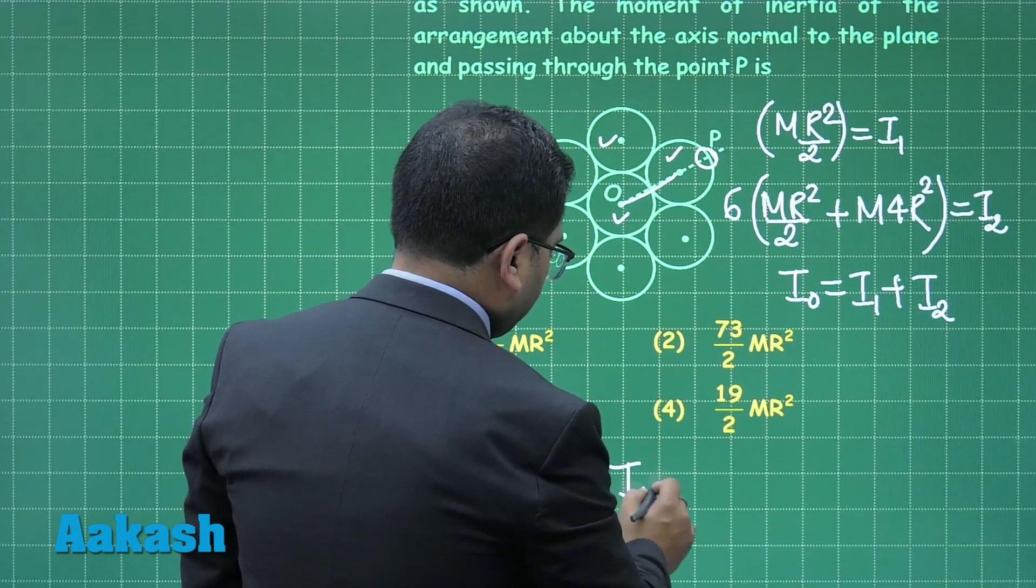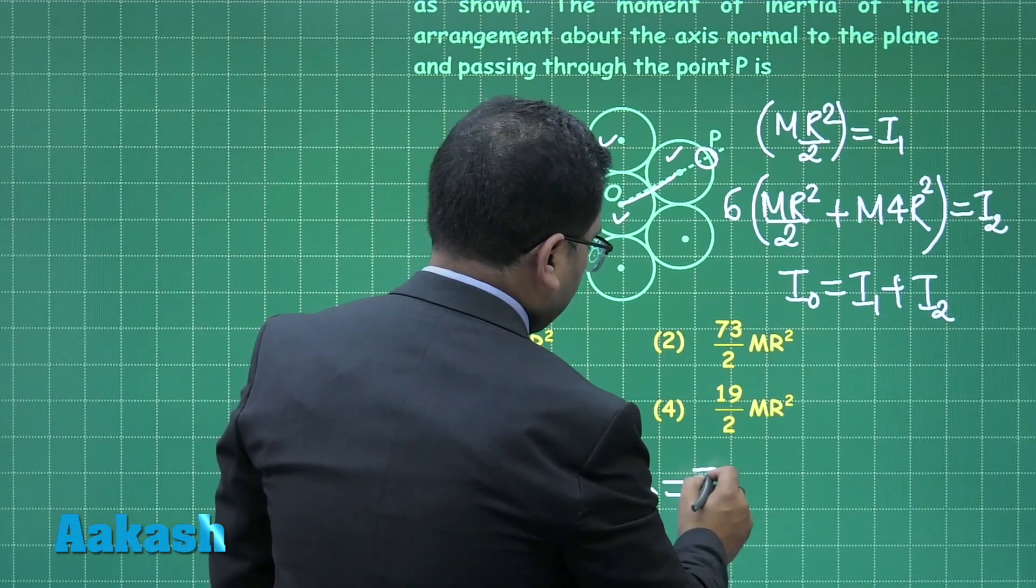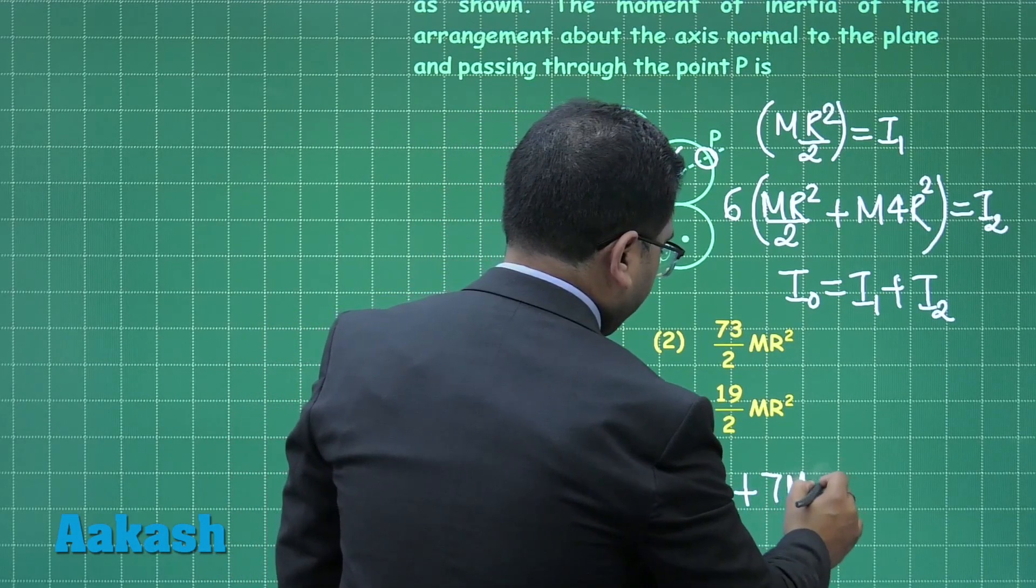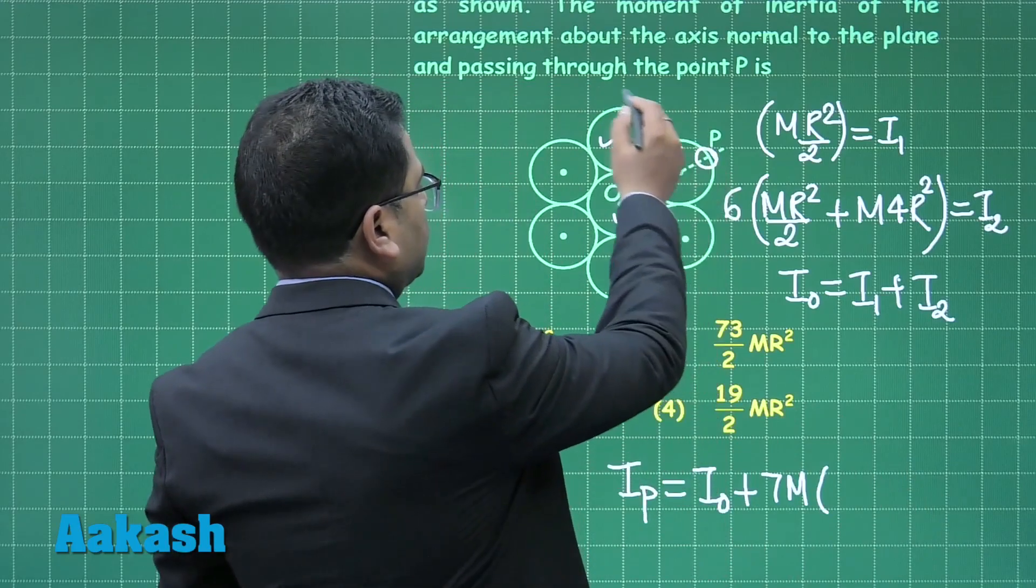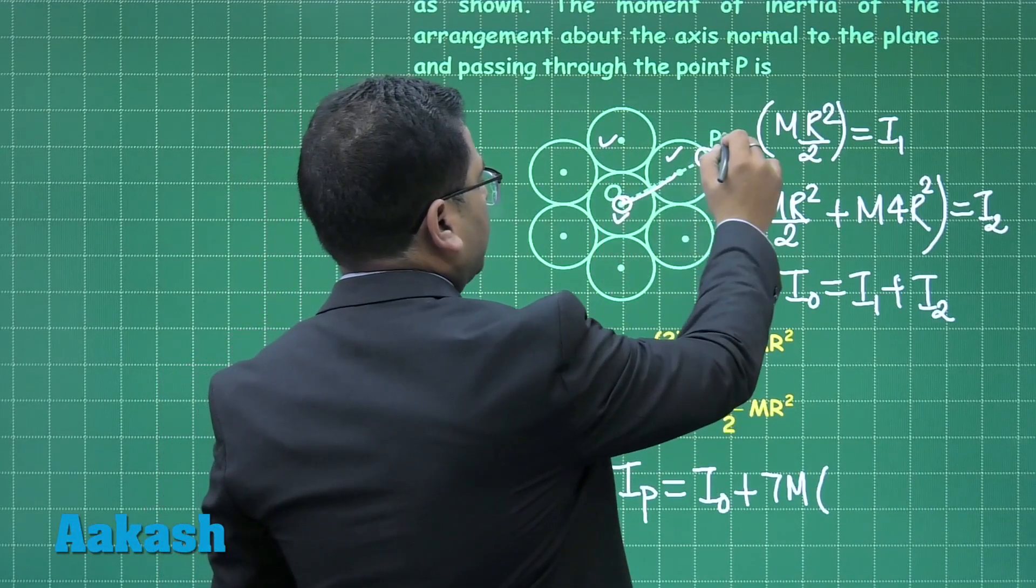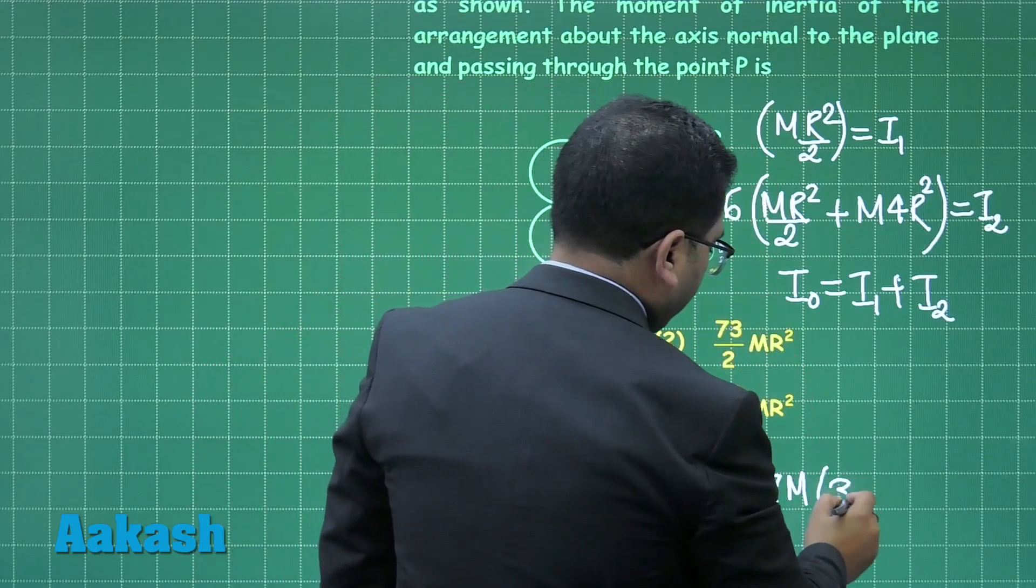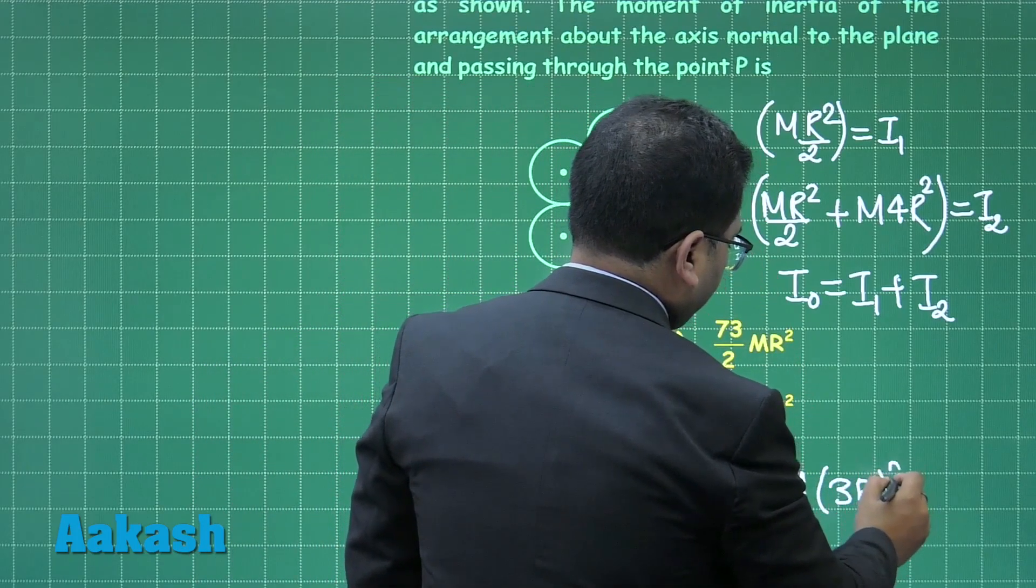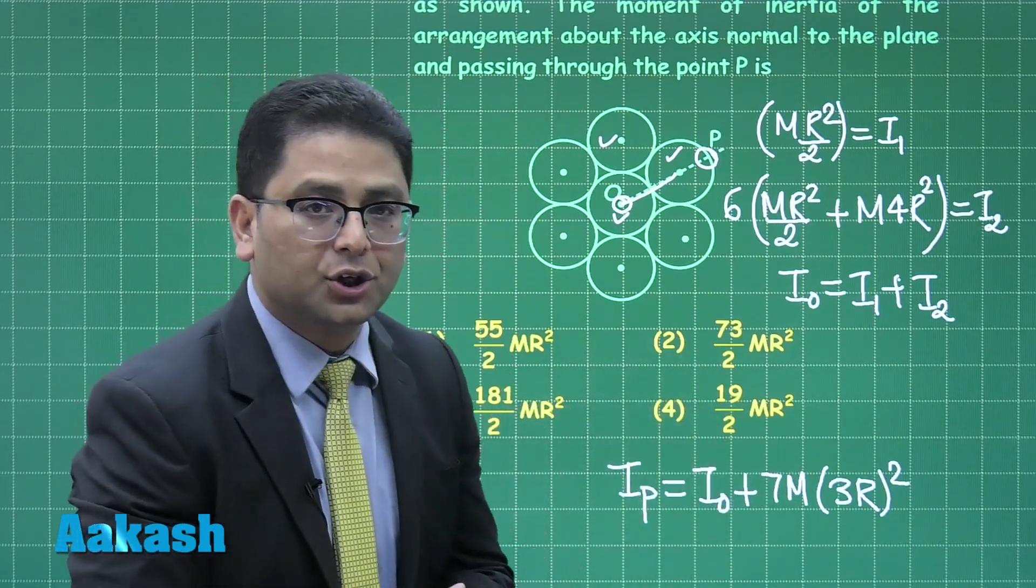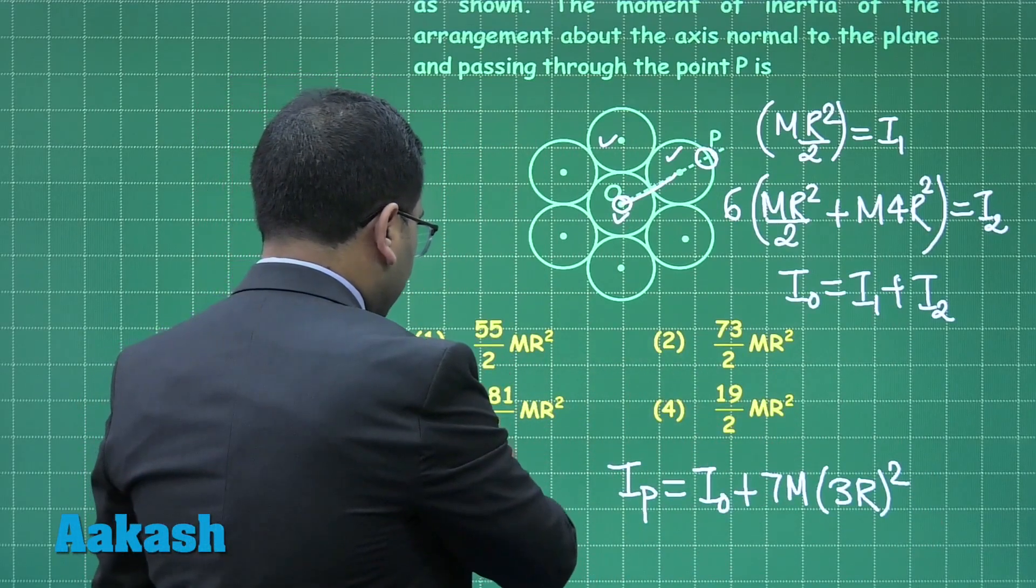Of course, all those seven things have the center of mass here and the perpendicular distance is 3r, so that will be (3r)². So you put the value, go for the simple calculation, and you would get option number 3 as the correct one. So question number 90 has option number 3 as the correct solution.